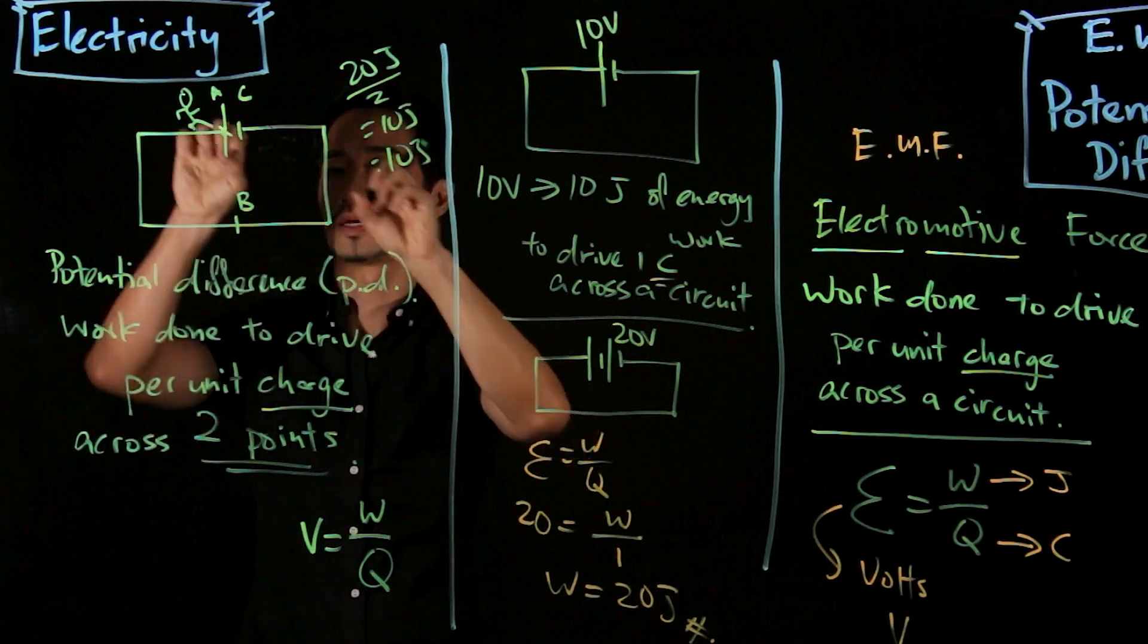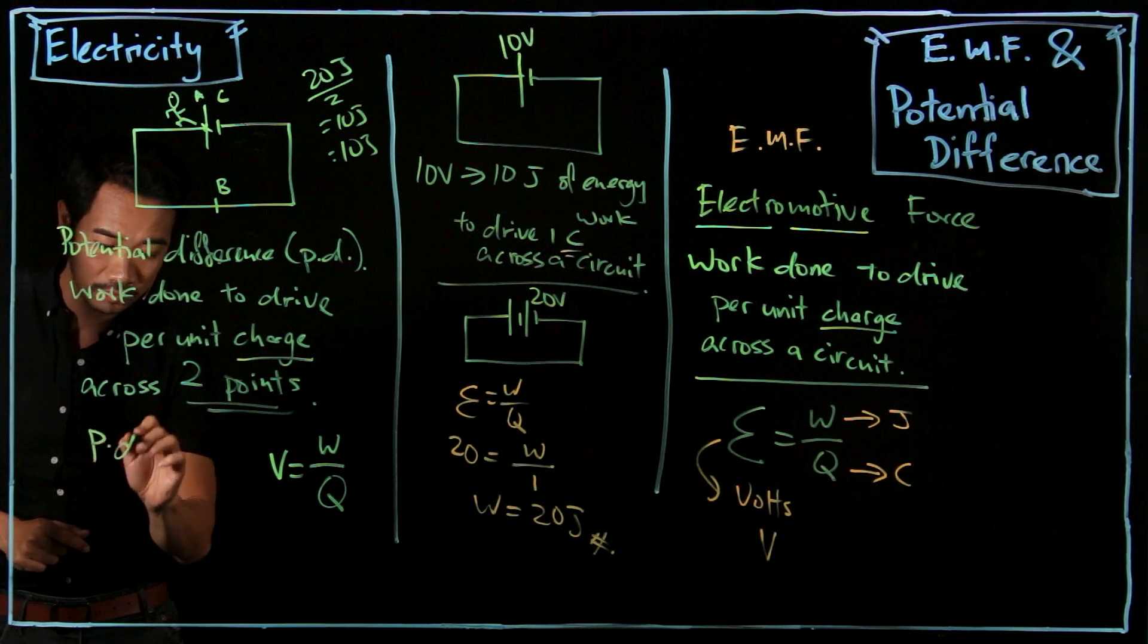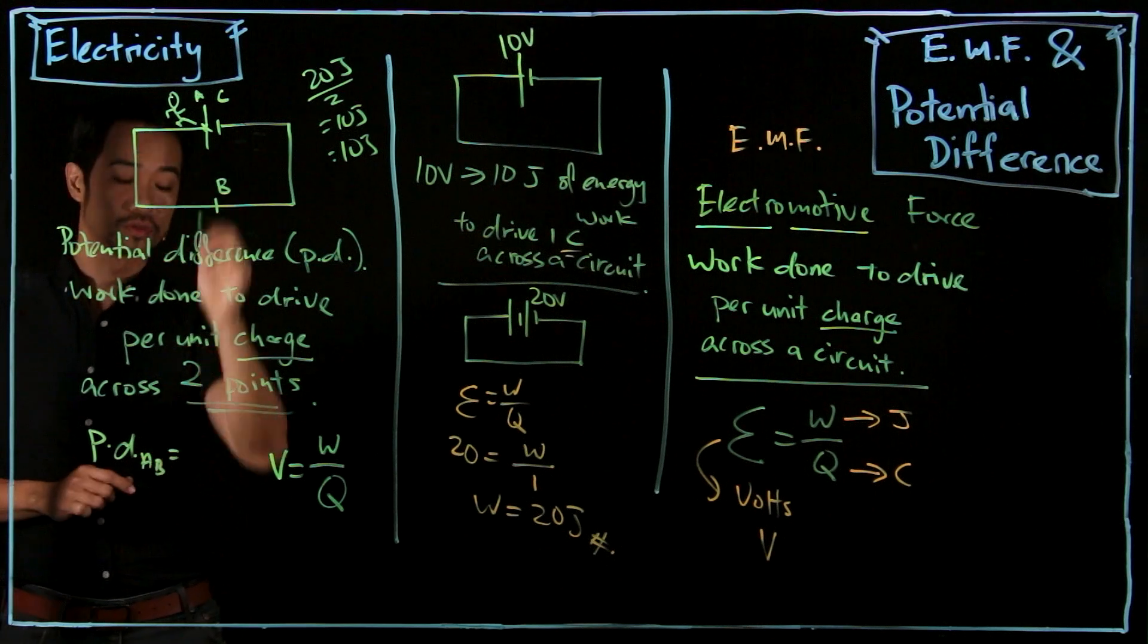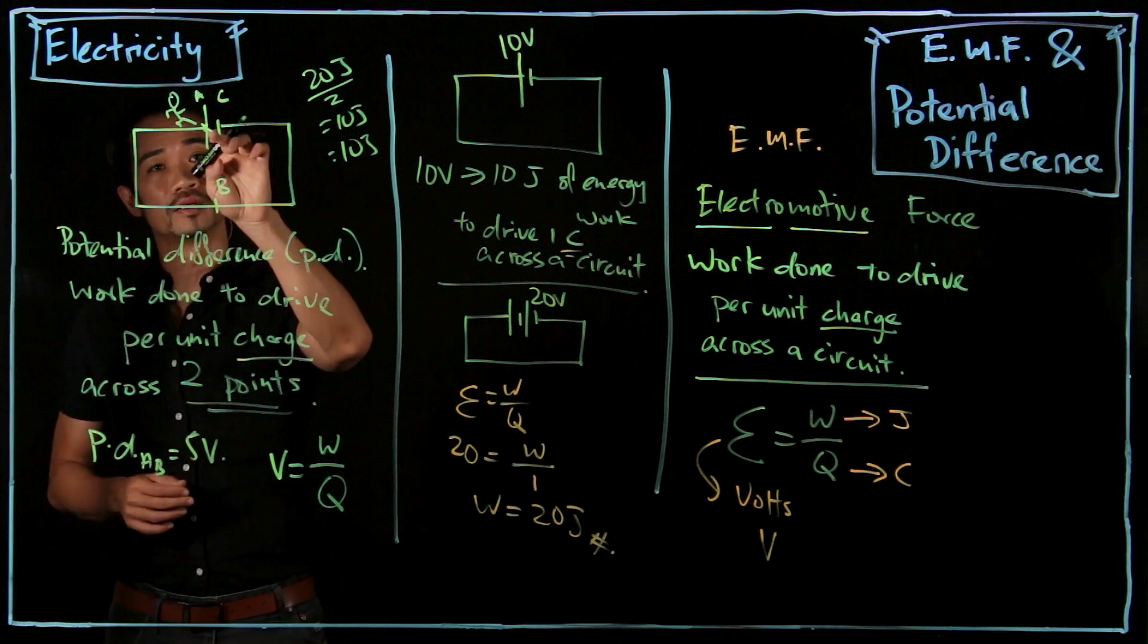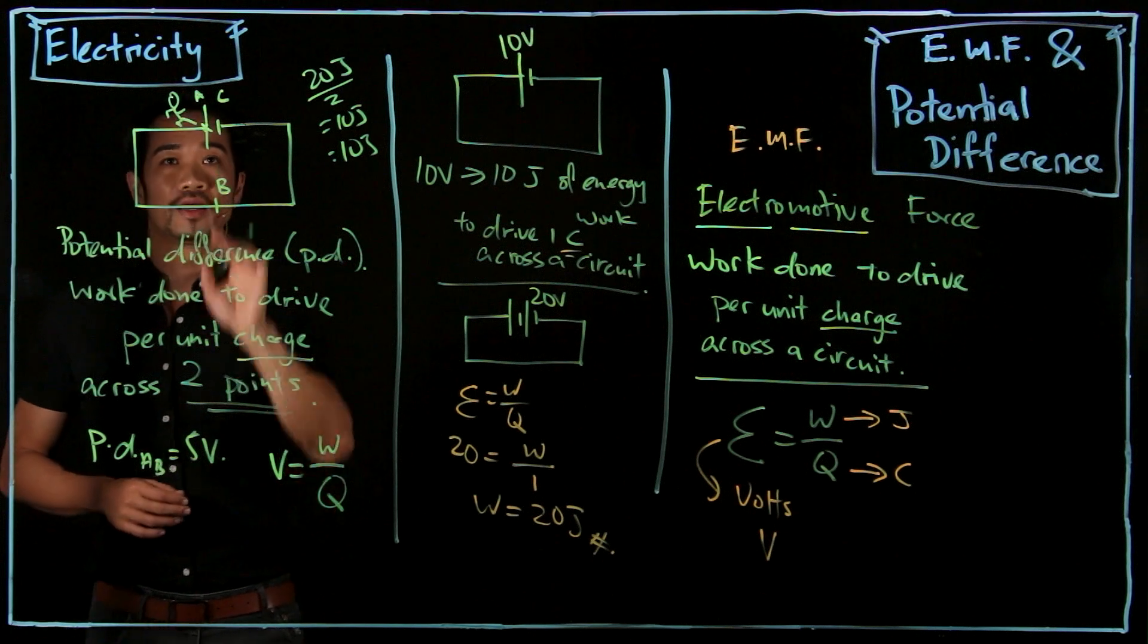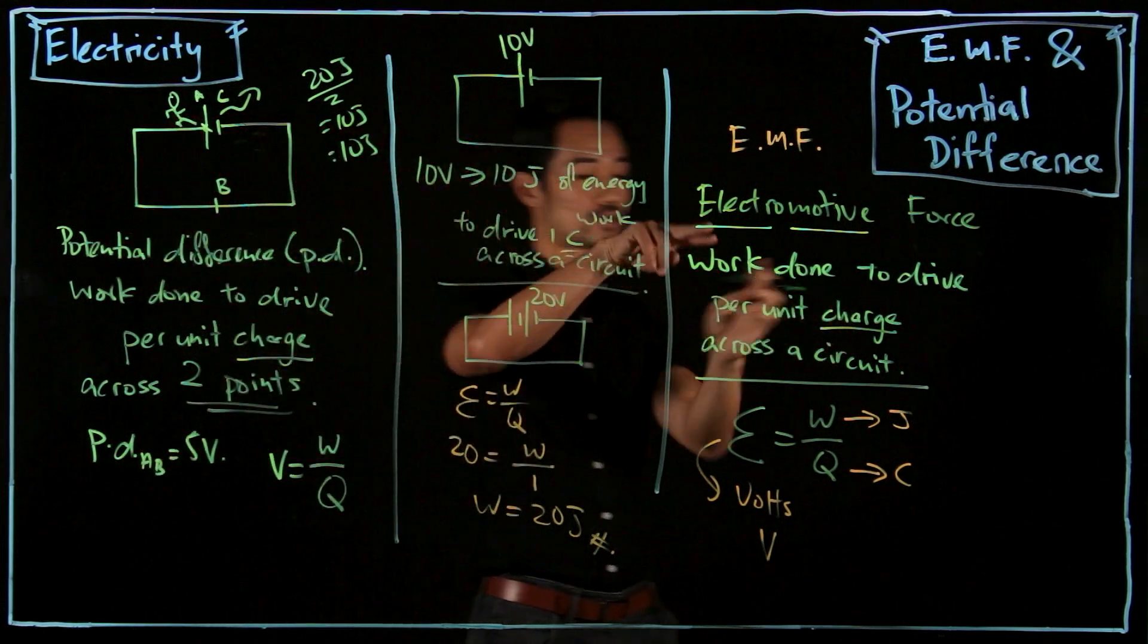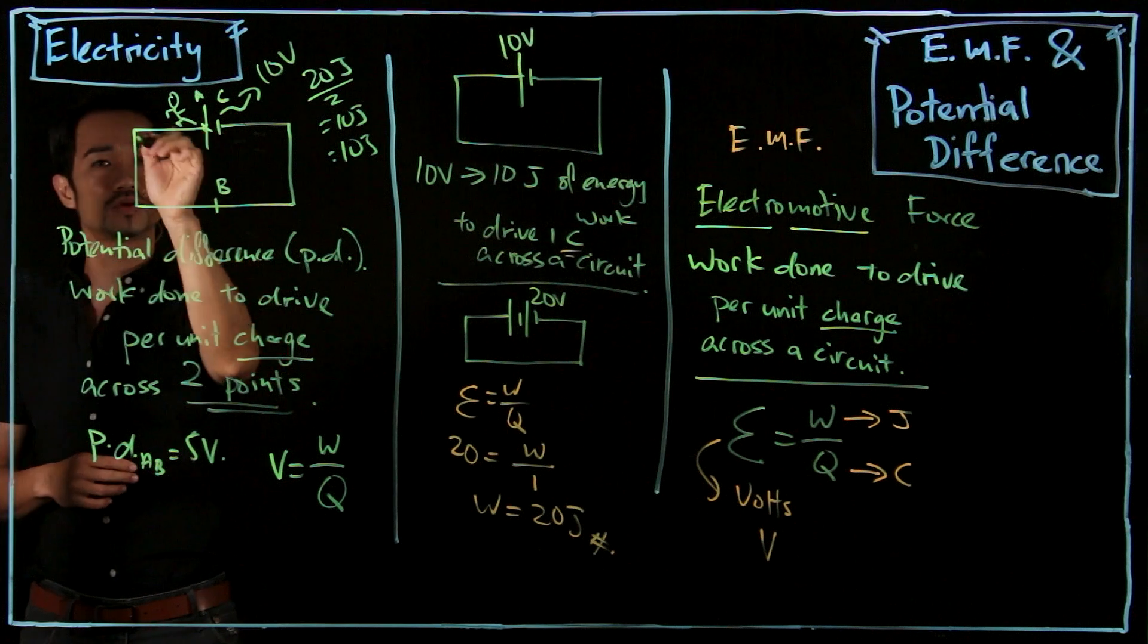So take this concept, put it into potential difference. I can say potential difference from A to B equals 5 volts, which means that the work done to drive the charge from A to B is 5 joules. And let's say if the EMF, which is the total energy source to drive across the circuit, is 10 volts.